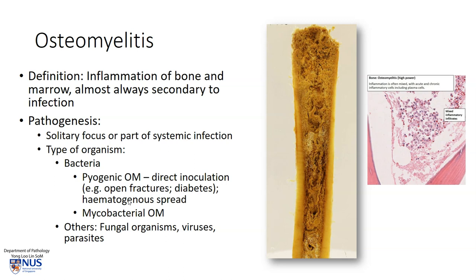There can be direct inoculation of the bacterial organisms, for example in open fractures perhaps from road traffic accidents, in patients with diabetes, and also in the setting of hematogenous spread of infection where there are bacterial organisms in the bloodstream. Mycobacterial osteomyelitis can also occur and this is usually quite difficult to treat. Other organisms ranging from fungal to parasites to even viral organisms can also give rise to osteomyelitis.